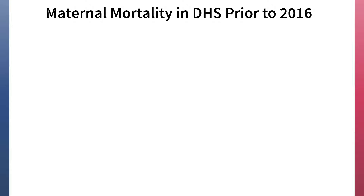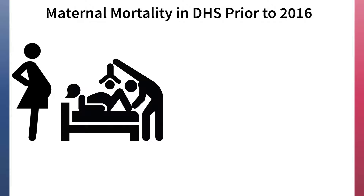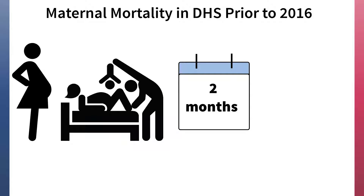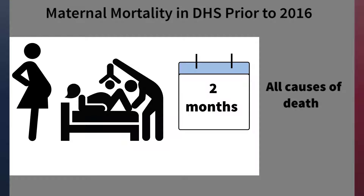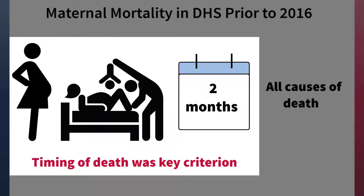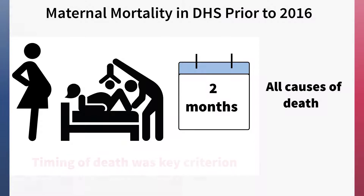Prior to 2016, maternal mortality was defined as any death to a woman while pregnant, during childbirth, or within two months of delivery or end of pregnancy, regardless of the cause of death. That is, the key criterion was the timing of the death, whether it occurred during or shortly after a pregnancy, not whether the death was caused by the pregnancy.